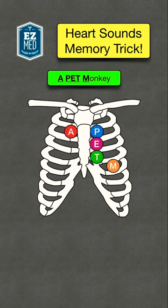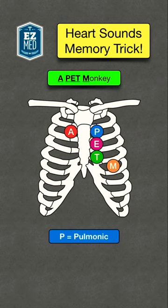First we have A, which stands for the aortic area. This is located right of the sternum at the second intercostal space. Next we have P, which stands for the pulmonic area. This is located at the left sternal border, second intercostal space.